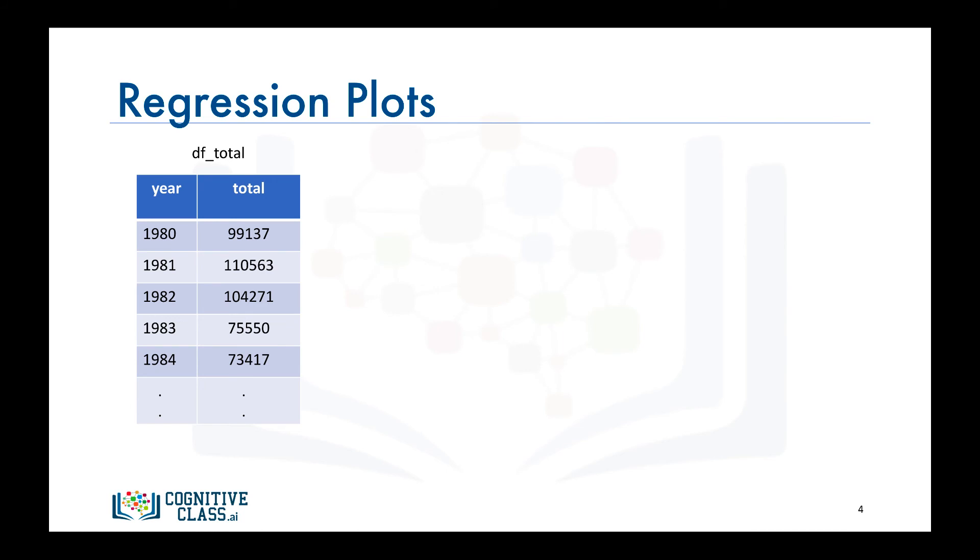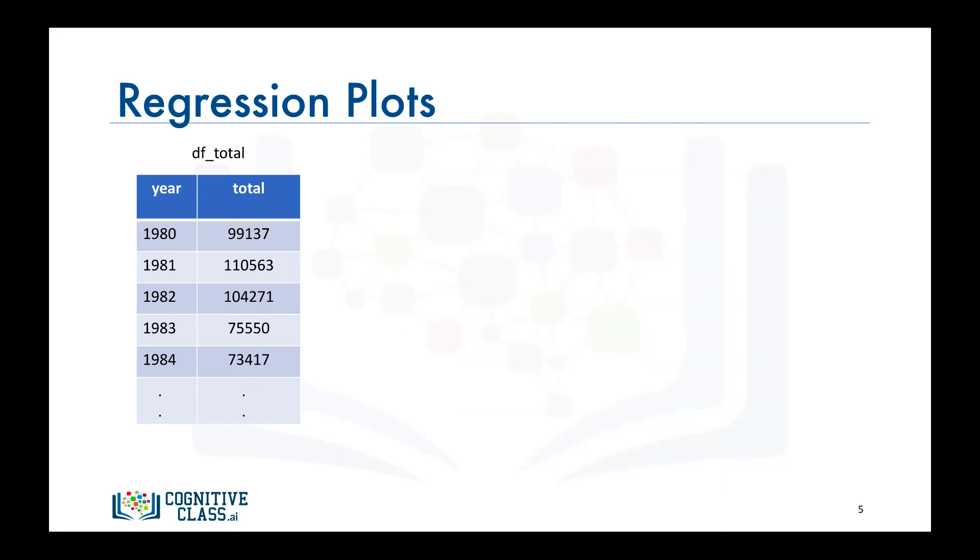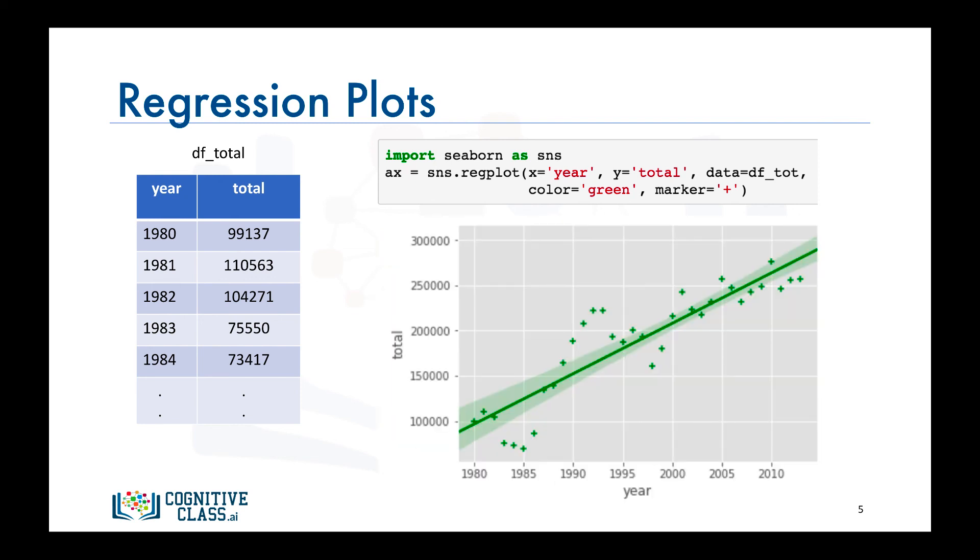Seaborn's regplot function also accepts additional parameters for personal customization. You can change the color using the color parameter. Let's change the color to green. You can also change the marker shape using the marker parameter. Let's change the shape of our markers to a plus marker instead of the default circular marker.